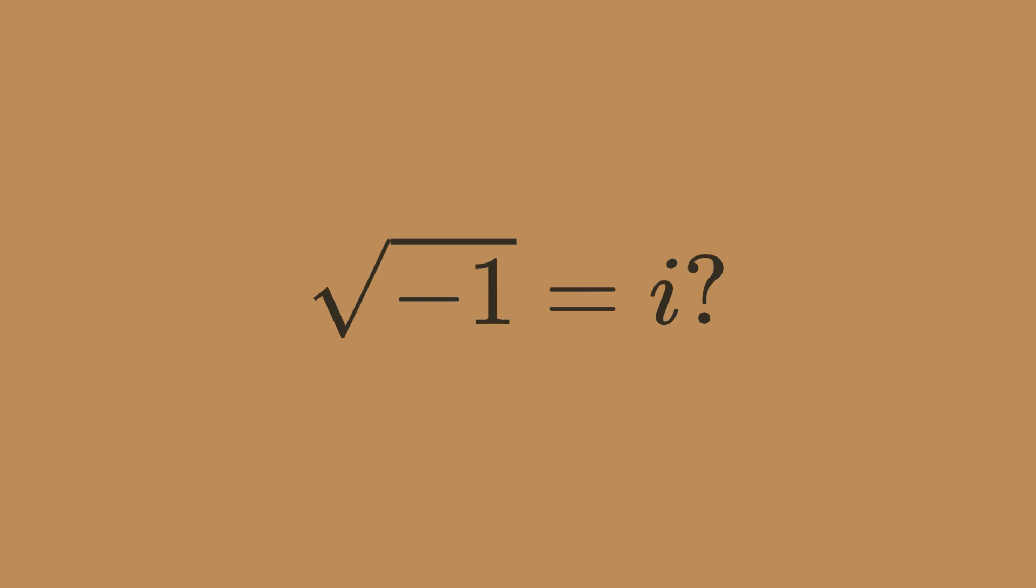Historically, this was called the imaginary number, because it wasn't a real number, and some people thought that it really was imaginary. Nowadays, these types of numbers are widely accepted, and they're called complex numbers.